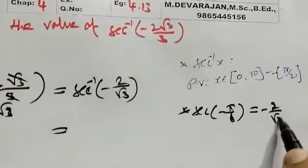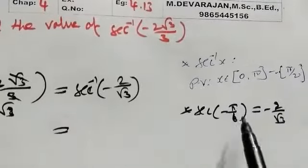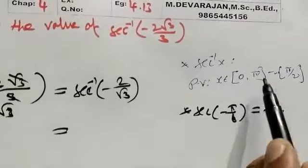which equals minus 2 by root 3. The principal value range is 0 to 180 degrees. For minus 30 degrees, we have 0 to 180 degree control.